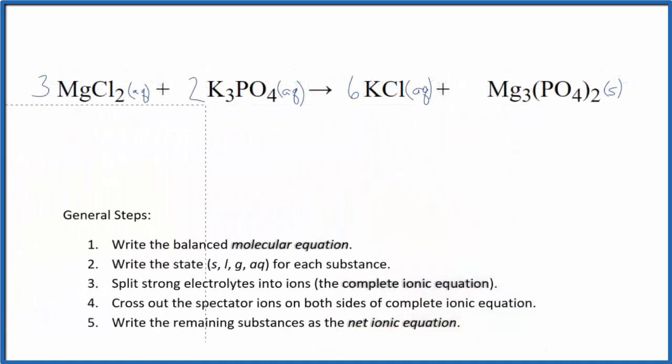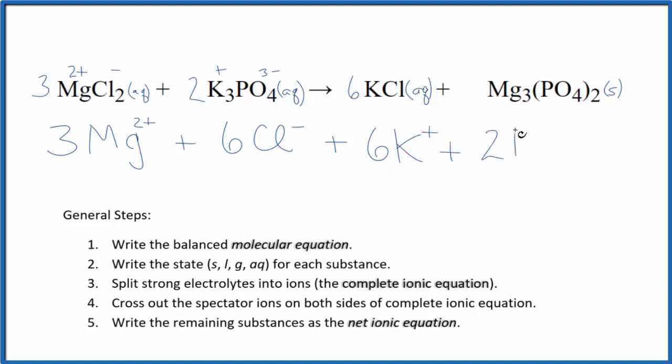Now we can split the strong electrolytes into their ions. This will be the complete ionic equation. So we have MgCl2. Magnesium group 2 on the periodic table has a 2 plus ionic charge. Chloride ion, 1 minus. So I have 3 magnesium ions. And I won't write aqueous each time. Let's do that at the end. 3 times the 2. So I have 6 of the chloride ions. Plus potassium group 1, 1 plus. And the whole phosphate is always 3 minus. So 2 times 3 is 6 potassium ions plus 2 phosphate ions. And these are the reactants for our net ionic equation.